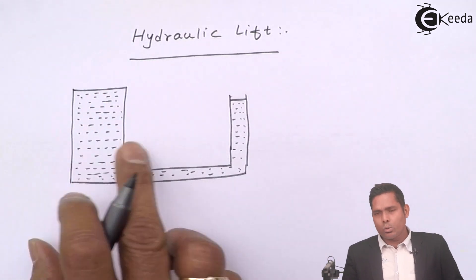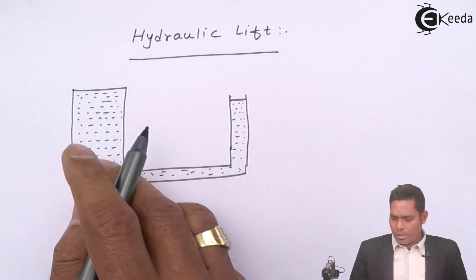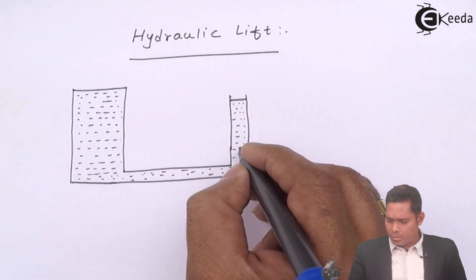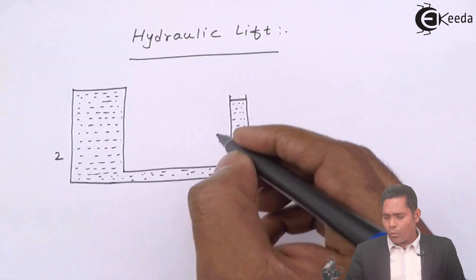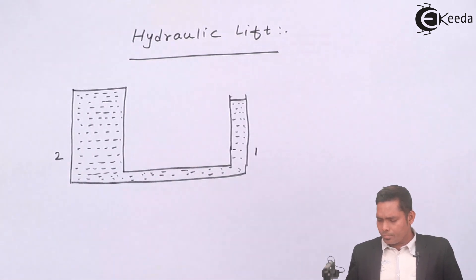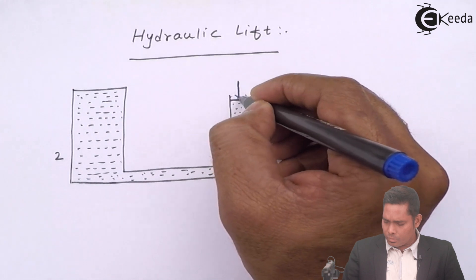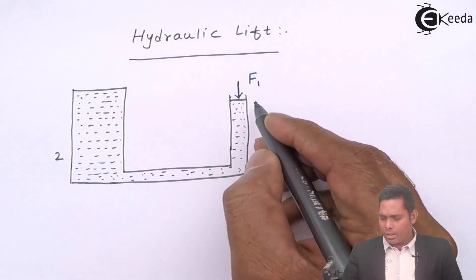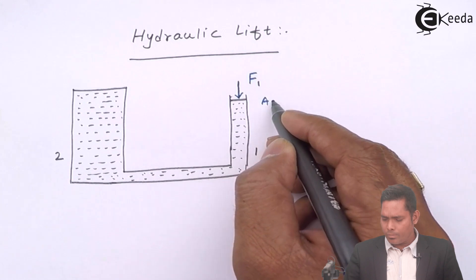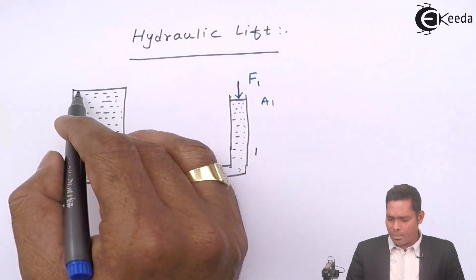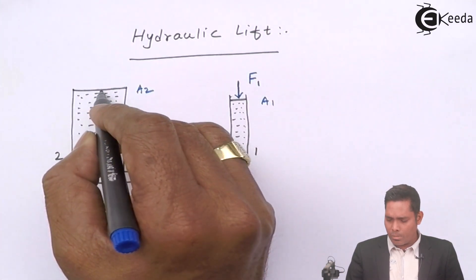Now the two cylinders — call this cylinder one and this cylinder two. A small force is applied at cylinder one, so the area of cross section here is suppose A1. Here the area of cross section is suppose A2.